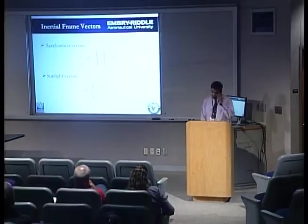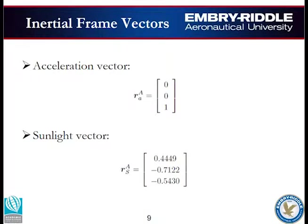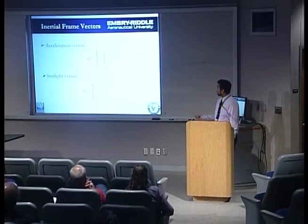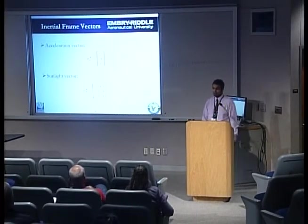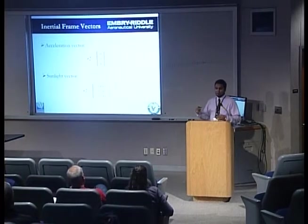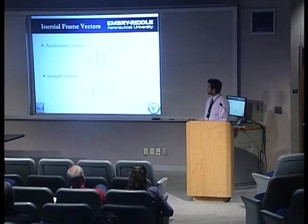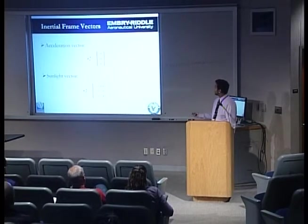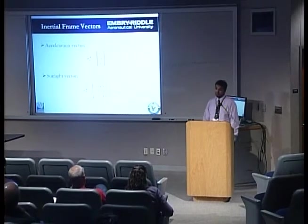To gather the inertial frame vectors, we set up the inertial frame such that the gondola's z-axis points upward, which is why gravity is experienced only in the z-component in the inertial frame. For the sunlight vector in the inertial frame, we gathered pre-flight sunlight data corresponding to a point where gravity did follow the relationship where most acceleration was felt in the z-component, and at that point we recorded the sunlight vector.